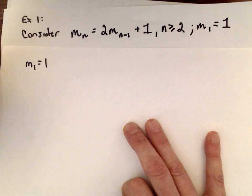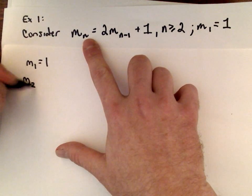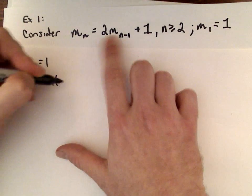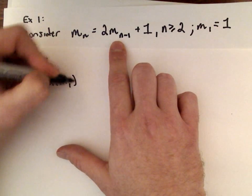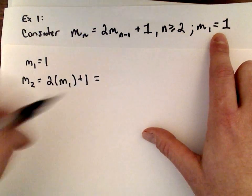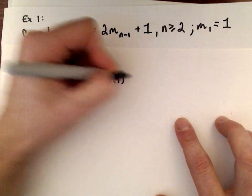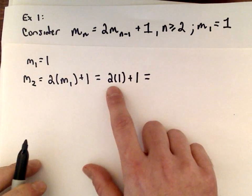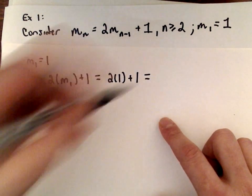We know that m sub 1 equals 1, that's given to us. M sub 2, we take 2 and multiply that by m sub 1 plus 1. Well, m sub 1 equals 1, so we would have 2 multiplied by 1 plus 1, and 2 multiplied by 1 plus 1 is 3.